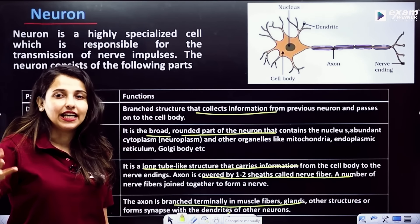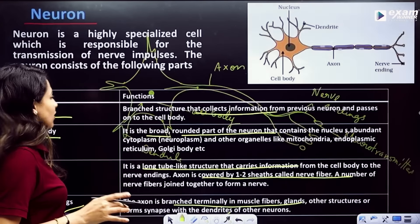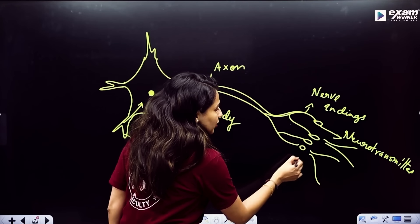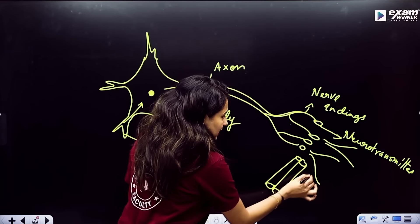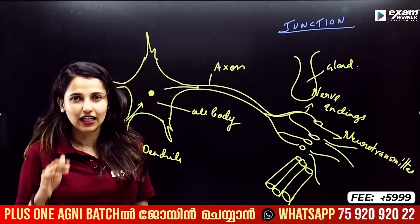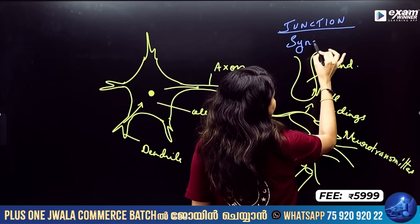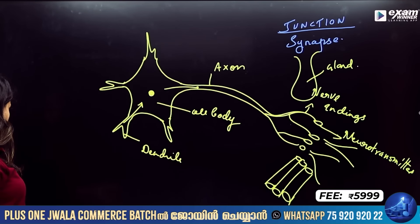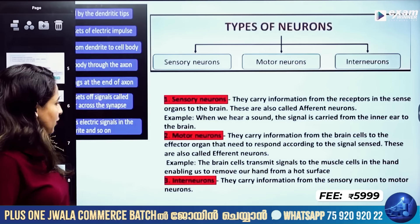The synaptic knob secretes chemical substances called neurotransmitters. These neurotransmitters are received by the dendrite of the next neuron, or by a muscle cell or glandular cell. The junction between two neurons, or between a neuron and a muscle cell, or a neuron and a glandular cell, is called a synapse. At the synapse, chemical substances called neurotransmitters are released.